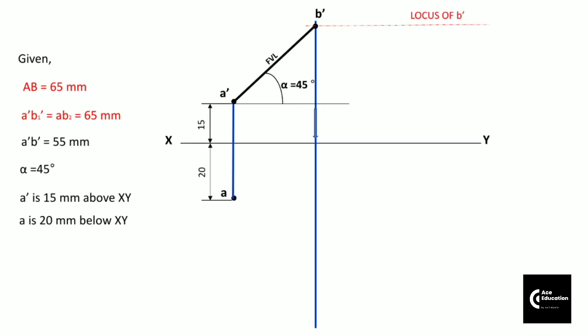Now, as we have been given the true length, that is A'B₁' is equal to 65 mm, you can keep 65 mm distance in compass. And from point A', you can cut an arc of length 65 mm. So you get the true length in front view, that is A'B₁'. And this true length makes an angle theta with XY line.